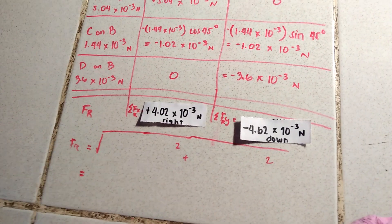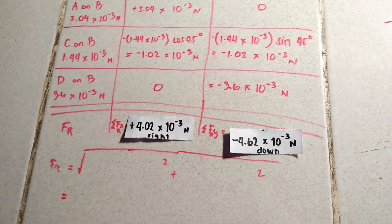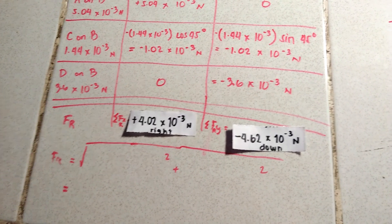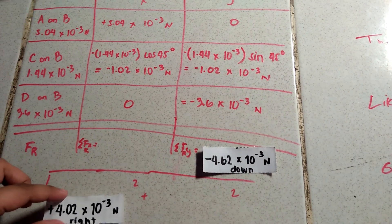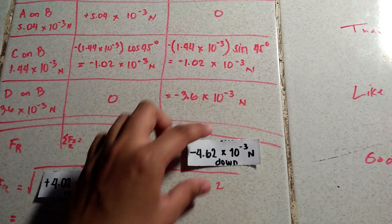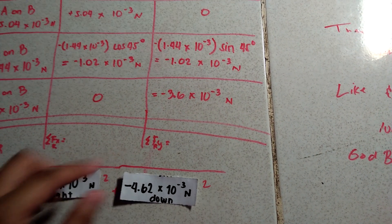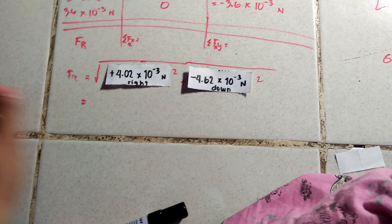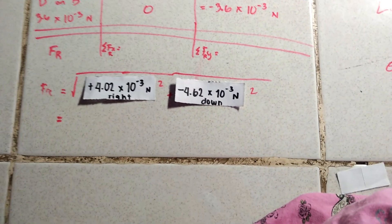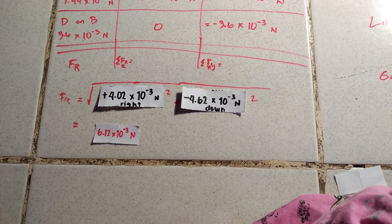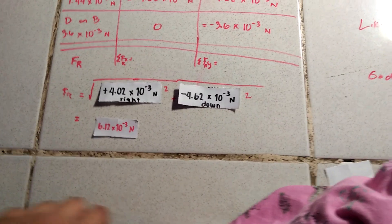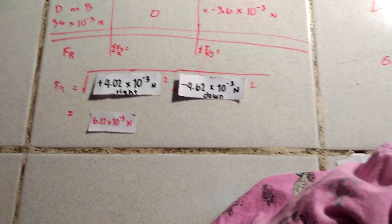We still have to look for the resultant force. And that is through the Pythagorean theorem. So according to the Pythagorean theorem, FR is equivalent to the square root of the square of FX and the square of FY. So once you solve this, I will get an answer of 6.12 times 10 to the negative 3 newtons. That's the force. But boys and girls are not done yet.